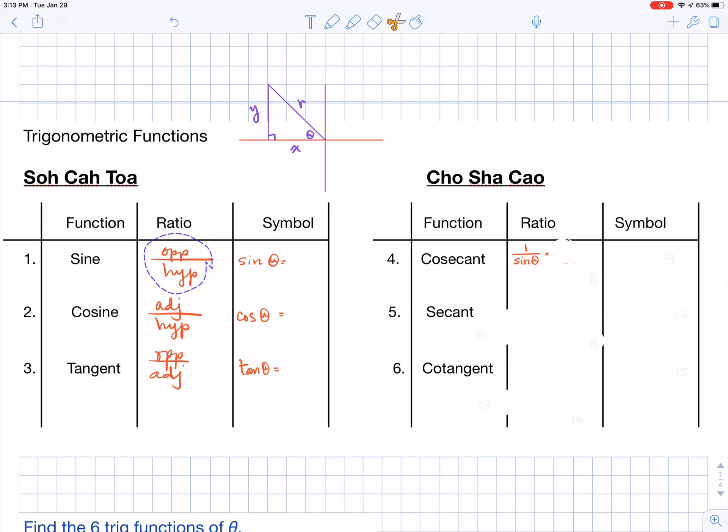So if sine is opposite over hypotenuse and cosecant is the reciprocal of that, then I know that cosecant is going to be hypotenuse over opposite, the reciprocal.